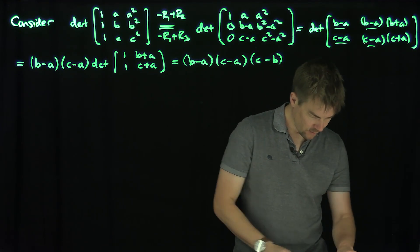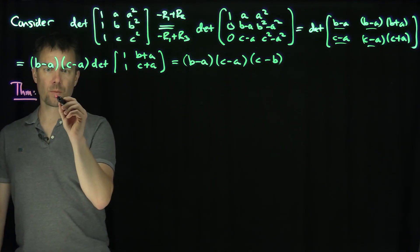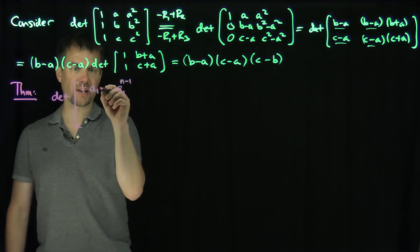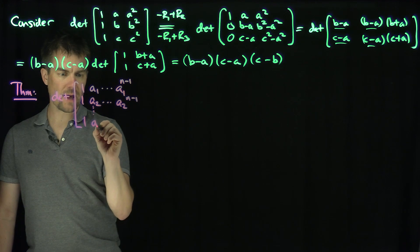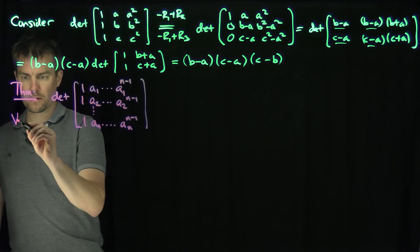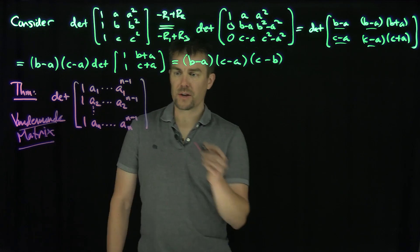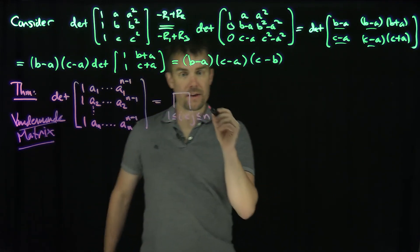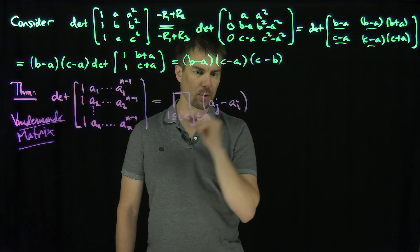Our conjecture — which is in fact a theorem — is that for the general Vandermonde matrix with rows 1, a₁, a₁², ..., a₁^(n-1); 1, a₂, a₂², ..., a₂^(n-1); down to 1, aₙ, aₙ², ..., aₙ^(n-1), the determinant equals the product over all 1 ≤ i < j ≤ n of (aⱼ minus aᵢ), i.e., the lower-row entry minus the higher-row entry, over all possible row combinations.